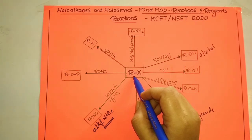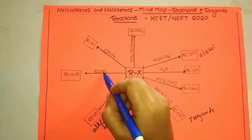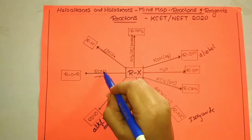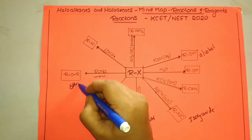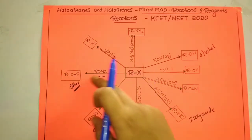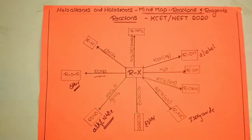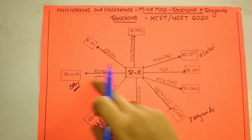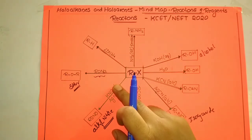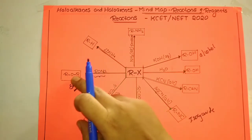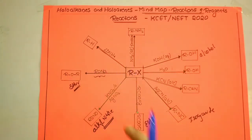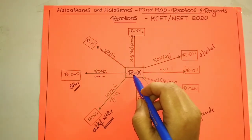When alkyl halide is treated with sodium alkoxide, it results in the formation of the respective ether. This particular reaction is called Williamson ether synthesis, which we will study in detail in the alcohols, phenols and ethers chapter.